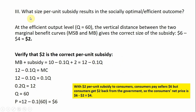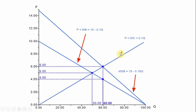The last thing I want to do is ask what size per unit subsidy would result in the socially optimal or efficient outcome. At the efficient level of output, where Q equals 60, the vertical distance between the two marginal benefit curves — the marginal social benefit and the private marginal benefit — gives the correct size of the subsidy. In this case it's going to be $2: $6 minus $4. Right here at the socially optimal outcome of 60 units, this vertical distance between the marginal social benefit and marginal benefit curve is $6 minus $4, which is $2.